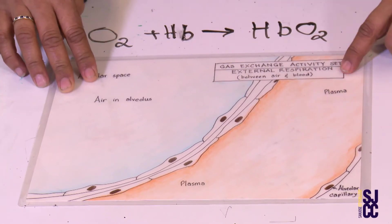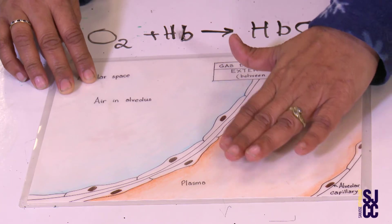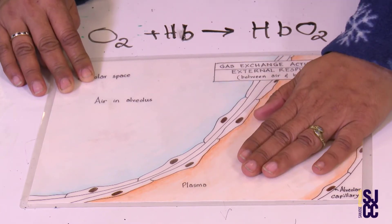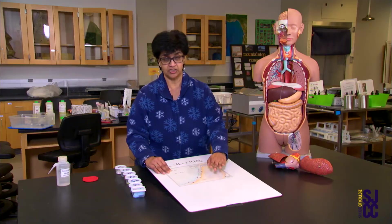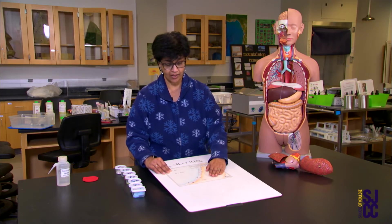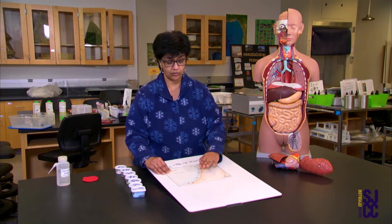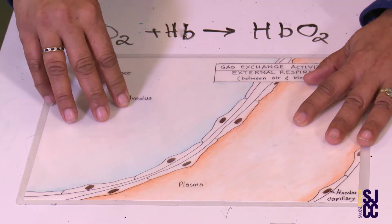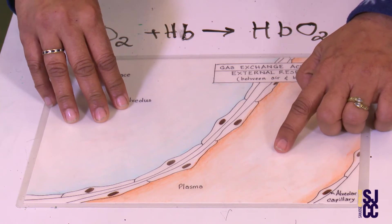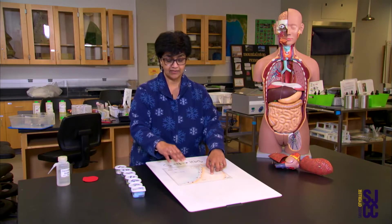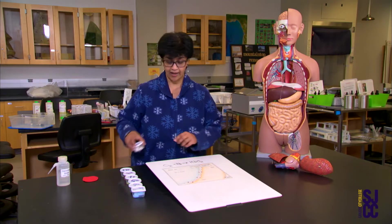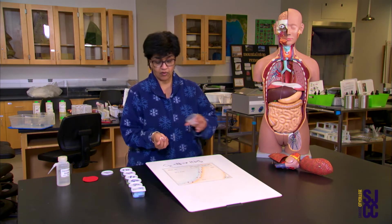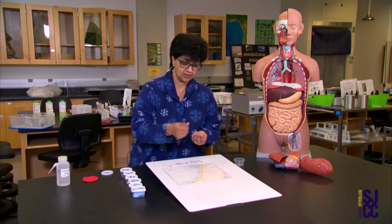This is a capillary. It doesn't look like blood here because I don't have any blood cells — let's pretend there is just plasma, and plasma is not red. So here you have the alveolus, here you have blood plasma, and let's say I have 16 oxygen molecules in my alveolus.